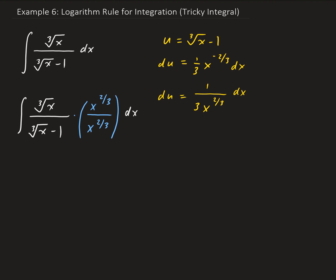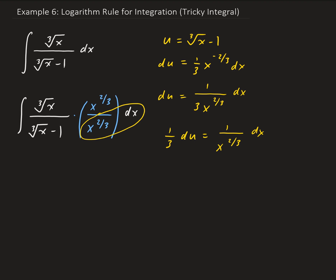Now we have x to the 2/3 in the denominator. Going back to du, this means 3 du equals 1 over x to the 2/3 dx — wait, actually 1/3 du equals 1 over x to the 2/3 dx. So the expression 1 over x to the 2/3 dx is going to get replaced by 1/3 du.